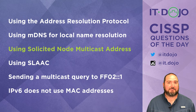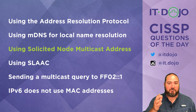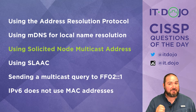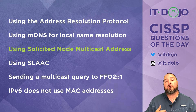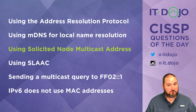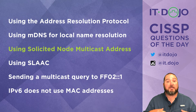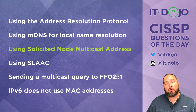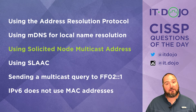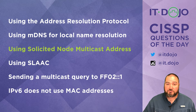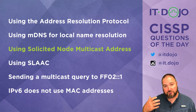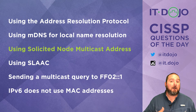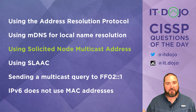The right answer is using the solicited node multicast address. In IPv6, you send a neighbor solicitation to a particular address called the solicited node multicast address when trying to resolve the MAC address of a destination IPv6 address. It's an ICMP multicast — the destination is a fixed 104-bit value concatenated with the low-order 24 bits of the IPv6 address you're looking at, which in most circumstances produces a unique multicast address.